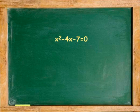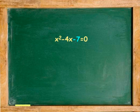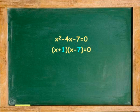What happens when we encounter a quadratic equation which cannot be factored? For example, x squared minus 4x minus 7 equals 0. Determining which two integers give a product of negative 7 and a sum of negative 4 is not possible, because 7 has only two factors, 7 and 1, and these two factors subtracted give 6 or negative 6, not negative 4 like the middle term. So the answers are not integers but decimals.